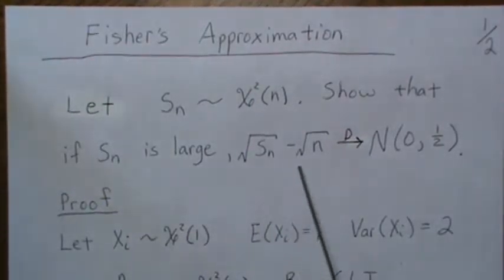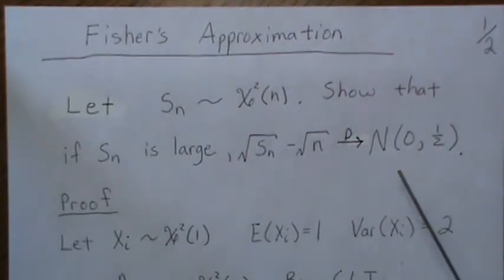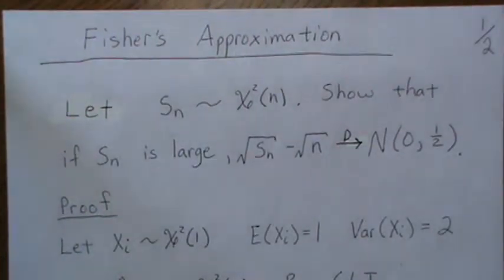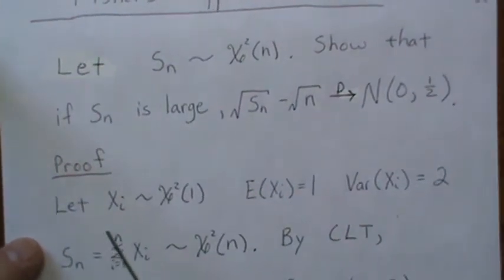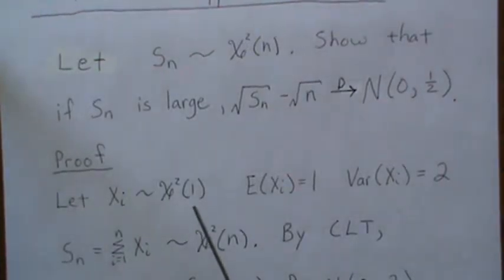We're going to use the Delta method to do this. I have a video on the Delta method if you search that in my YouTube channel. So let's go. Let X_i be chi-squared(1), so the mean of that is 1 and the variance is 2.